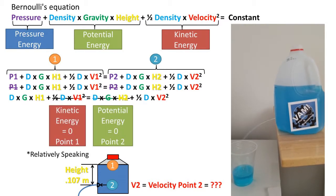Next, we notice that at point 1, there is no kinetic energy, and at point 2, there is no potential energy. So the kinetic energy portion of the equation gets eliminated from the point 1 side of the equation, and the potential energy portion of the equation gets eliminated from the point 2 side of the equation.